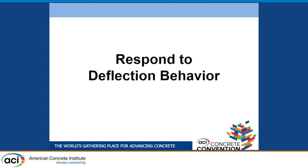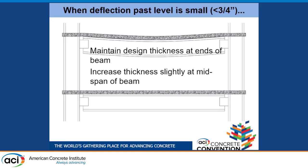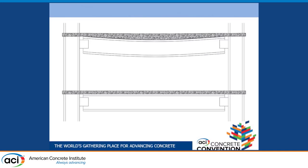How do you respond to the deflection behavior? First, if deflection past level is small — less than three-quarters of an inch — then you can maintain design thickness at the ends of the members and increase the thickness slightly at mid-span to decrease the differential between the ends and mid-span. Essentially what you're doing is gauging up off the steel by an increased amount, and what that does is give you the material that, after the member deflects, restrains and creates a reasonably level surface.